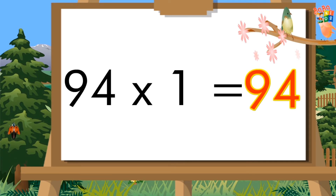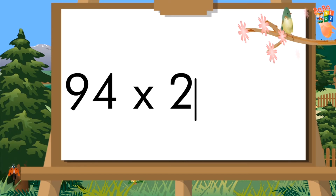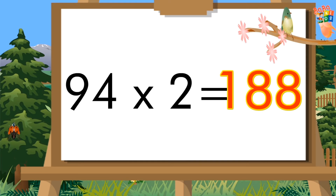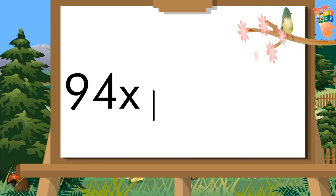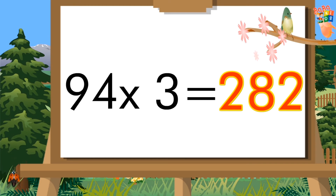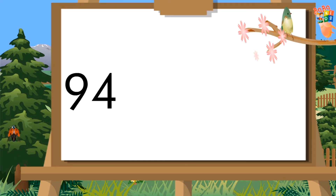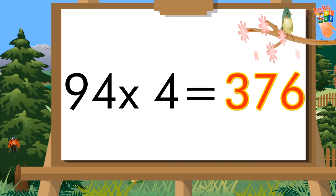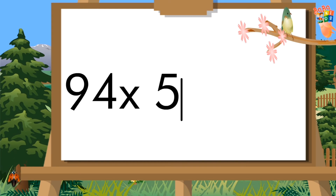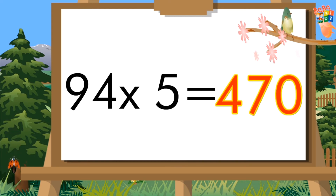Ninety-four ones are ninety-four. Ninety-four twos are one hundred eighty-eight. Ninety-four threes are two hundred eighty-two. Ninety-four fours are three hundred seventy-six. Ninety-four fives are four hundred seventy.